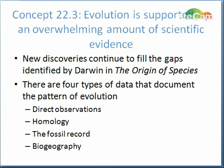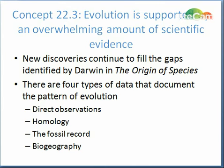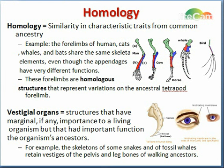First we'll look at homology. Homology is the similarity in characteristic traits from a common ancestor. For example, we have the forelimbs of a human, a cat, a whale, and a bat that all share the same skeletal elements. Even though the current appendages in each of these different species have very different functions, the forelimbs are homologous structures because they represent variations on an ancestral tetrapod forelimb.